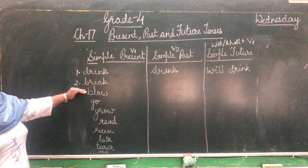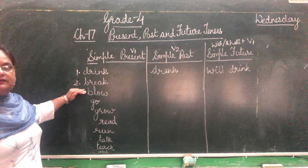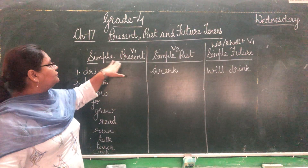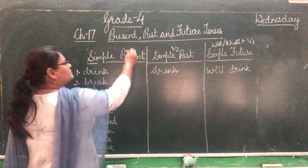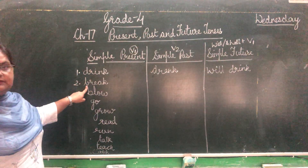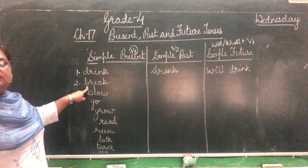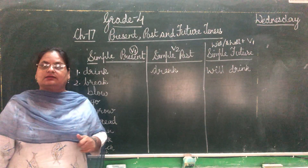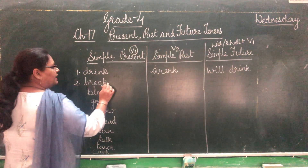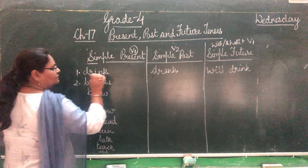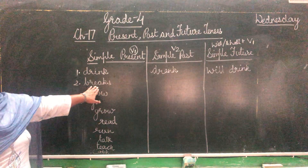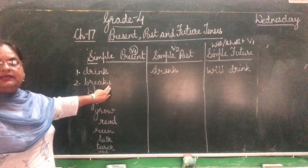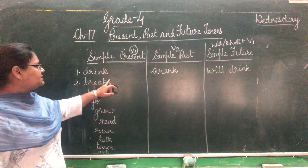The second verb mam has taken is break — B-R-E-A-K. For simple present, we use the verb's first form: break. Keep in mind: if the noun is singular, we add S to the verb. So 'my dog breaks.' If the noun is plural, we do not add S. With 'I,' we also do not add S — I break my cup. But: my younger brother breaks my cup — here we add S.